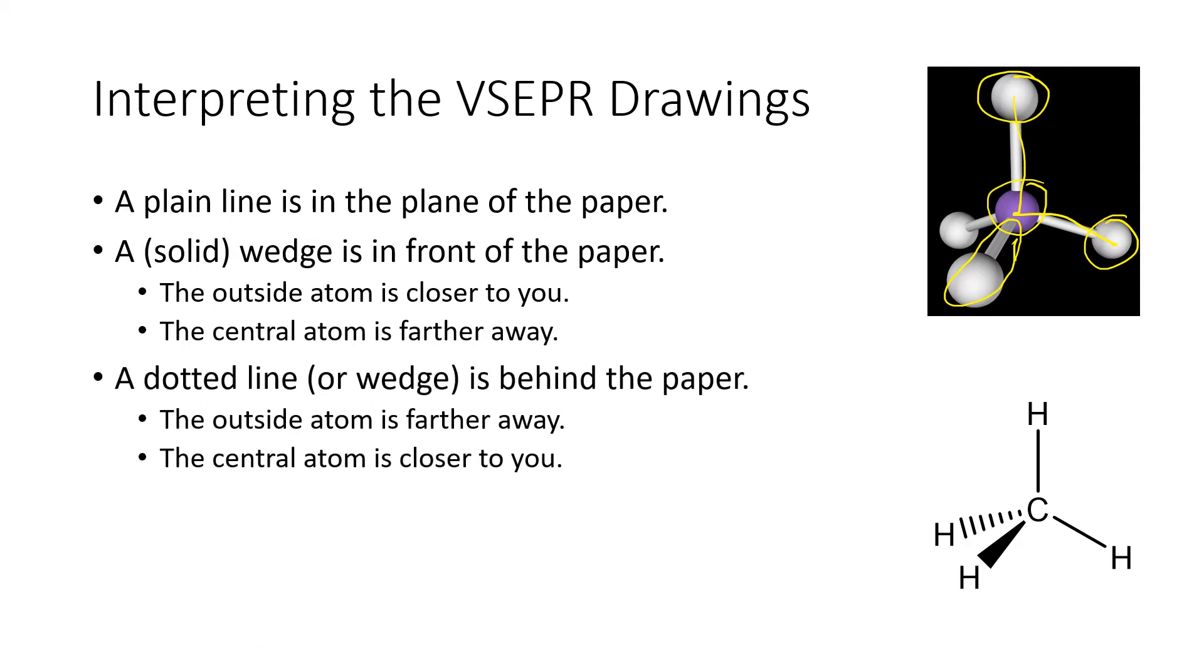For the last one, a dotted line or dotted wedge is behind the paper. This dotted wedge is showing that last remaining hydrogen atom tucked behind the plane of the paper. The carbon atom in the middle is closer to you than the hydrogen atom is, and so that dotted wedge we're showing is representing this hydrogen atom.